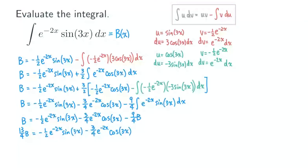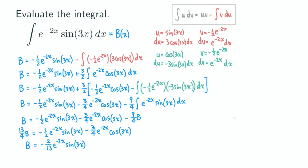Our final answer: B equals negative one half times 4 over 13 — cancel the 2 and 4 — giving negative 2 over 13 e to the negative 2x sine 3x. The other term: negative 3 over 4 times 4 over 13 — cancel the 4 — giving negative 3 over 13 e to the negative 2x cosine 3x. And we also have the constant of integration, plus C.